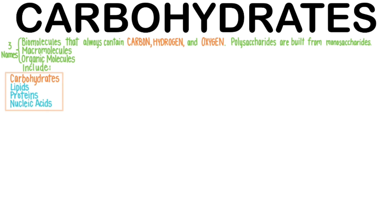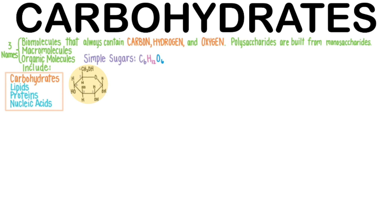The monomers or building blocks of large carbohydrate molecules are the monosaccharide simple sugars, most notably glucose, which I've drawn here. In the watery environment of the body, sugars form into ring structures. Simple sugars have the formula C6H12O6 — six carbons, 12 hydrogens, and six oxygens. So this is glucose.